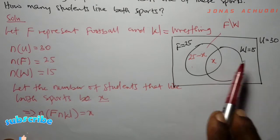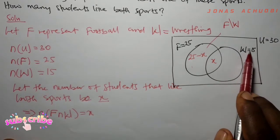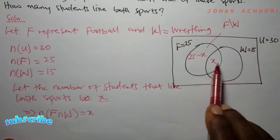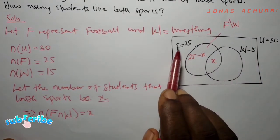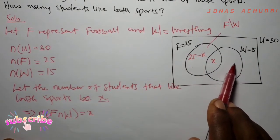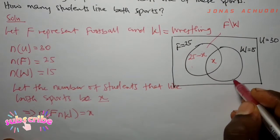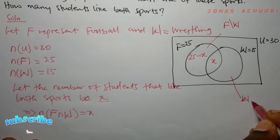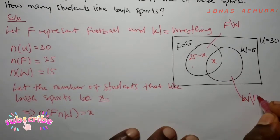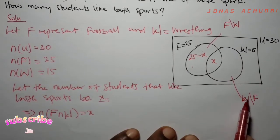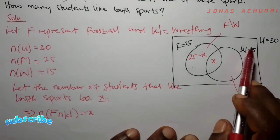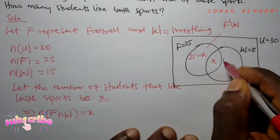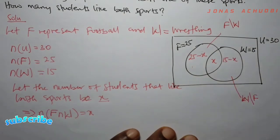Over on the other side, 15 students liked wrestling, but X of them also liked football. The region of those who liked wrestling alone is W difference F — the set of those who liked wrestling but did not like football. So that section is 15 minus X.